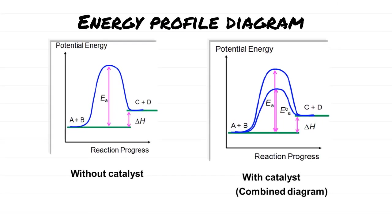When explaining the effect of catalyst on reaction rate, we use an energy profile diagram. You need to know how to draw an energy profile diagram both without and with a catalyst. The left diagram shows only one profile with no catalyst, meaning the reaction takes quite a long time to form products. The right diagram combines two profiles — one without catalyst and one with catalyst — where the lower pathway provided is the one with catalyst.